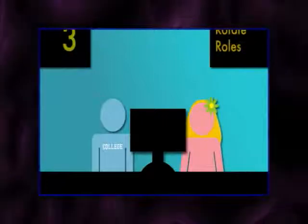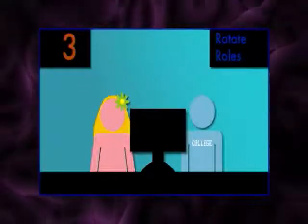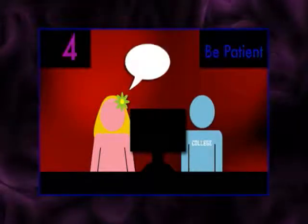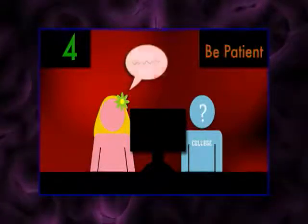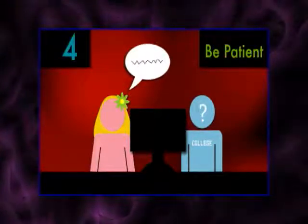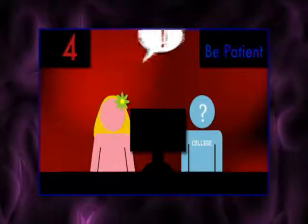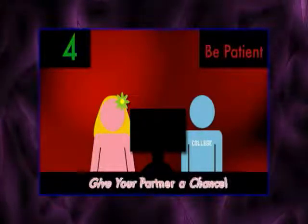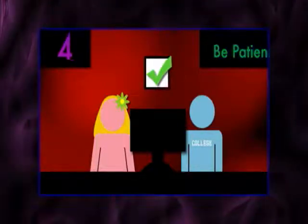Rotate roles. It's important to switch roles every so often so both partners get an equal share of the work. Switching helps prevent errors and stimulates conversation too. Be patient — be prepared to explain yourself to your partner and don't get frustrated if they don't understand it at first. By explaining your work to your partner, you'll be helping yourself learn as well. Remember the ancient Chinese proverb: to teach is to learn. And be sure to give the driver a little time to correct his or her own mistakes. After all, no one likes a backseat driver.